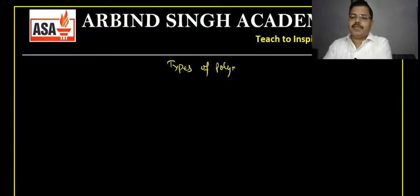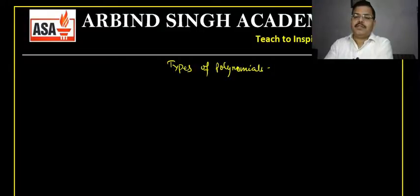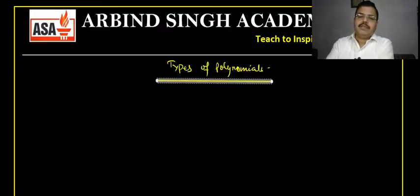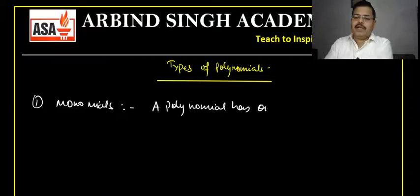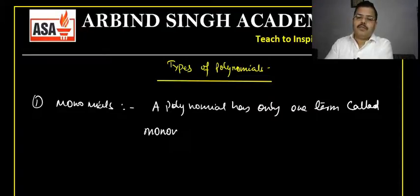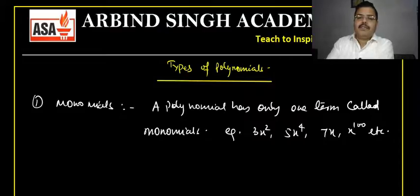Types of polynomials on the basis of number of terms. The first type is monomials. If a polynomial has only one term, it is called a monomial. For example: 3x², 5x⁴, 7x, x¹⁰⁰ — these are all monomials because there is only one term.